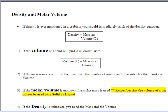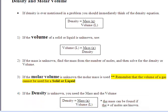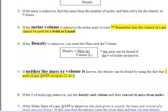If the mass is unknown, find the mass from the number of moles and then solve for the density or volume. Now remember, these are just some rules that you need to take into account when using the density formula. If the molar volume is unknown, the molar mass is used. Remember that the volume of a gas cannot be used for solid or liquid. So 22.4 liters does not apply to a solid or liquid.